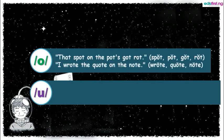Proceeding, we have: That spot on the pot got rot — spot, pot, got, and rot all have the short O vowel sound. For the long O: I wrote the quote on the note — wrote, quote, and note possess the long O sound. You can see that the E at the end actually makes the vowel sound a bit longer.